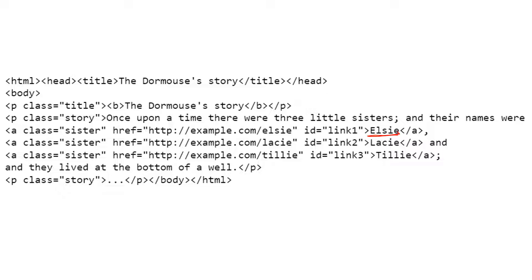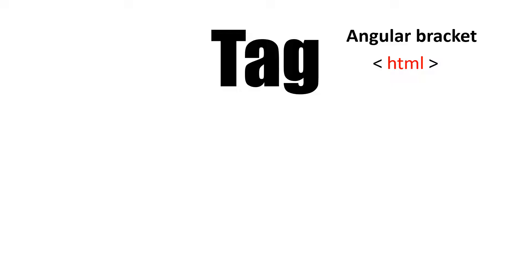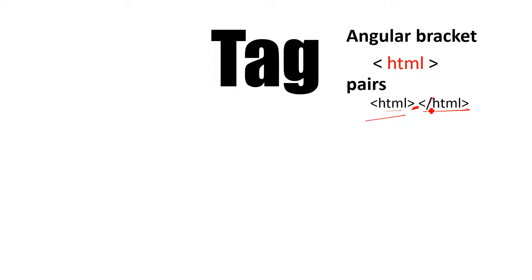That keyword is referred to as a tag. Let me help you understand how to identify a tag. A tag has two basic attributes: number one is angular brackets. So if we consider HTML as a tag, it will be enclosed within two angular brackets. The second characteristic is it always appears in a pair. Whatever content you have comes in between these two. The closing tag is prefixed with a forward slash.